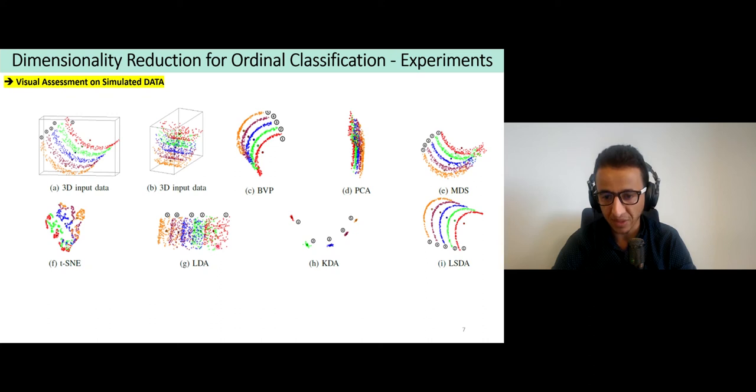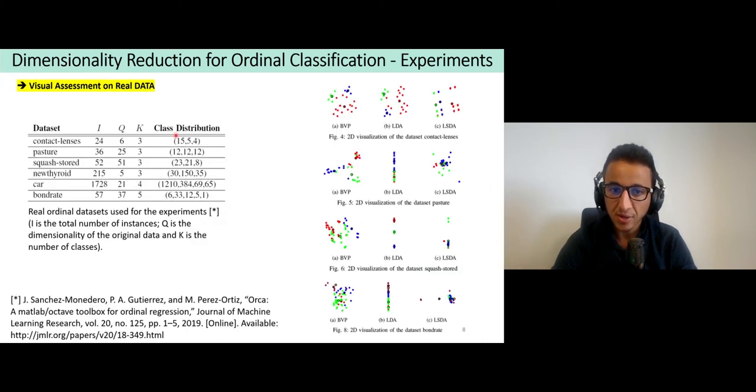The final experiments were conducted on high dimensional feature space obtained from real data exported from this work, and we highlight only BVP, LDA and LSDA, those two because they were the ones showing great results on synthetic data set. We can see that BVP outperforms globally the LDA and LSDA for this real data set. Although LDA preserves the ordinality in some configurations, the full structure of data is lost, while in BVP we can still see this nice visualization of data while preserving ordinality.